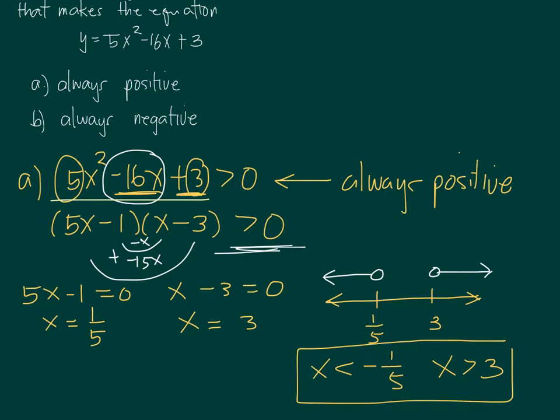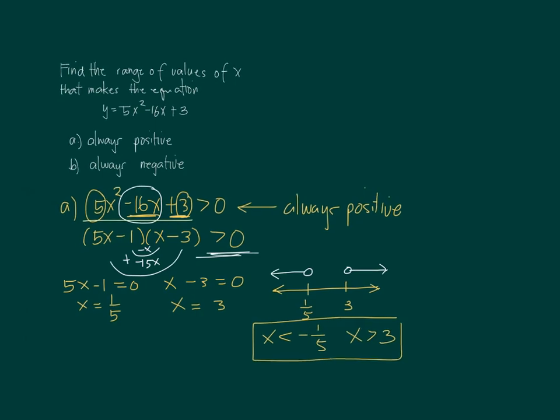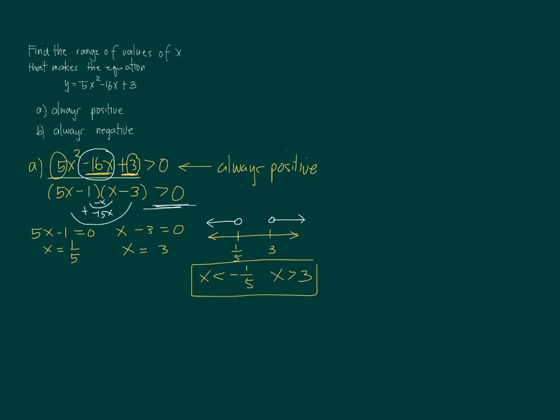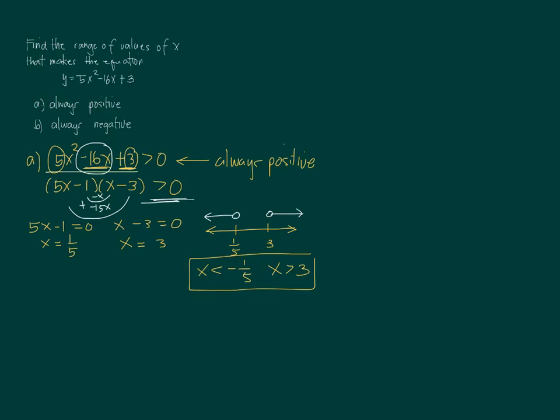Once you solve letter A, it is now very easy to solve letter B, because letter B is just a follow-up of letter A. For letter B, since we're both working on 5x squared minus 16x plus 3, this time this will be less than 0.